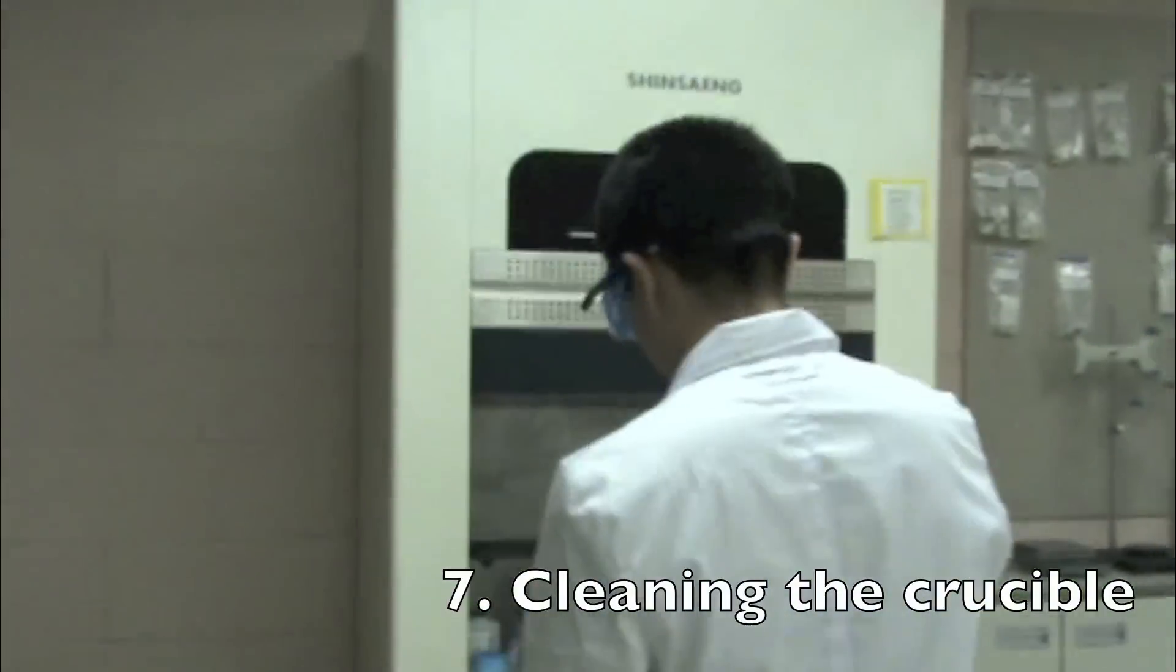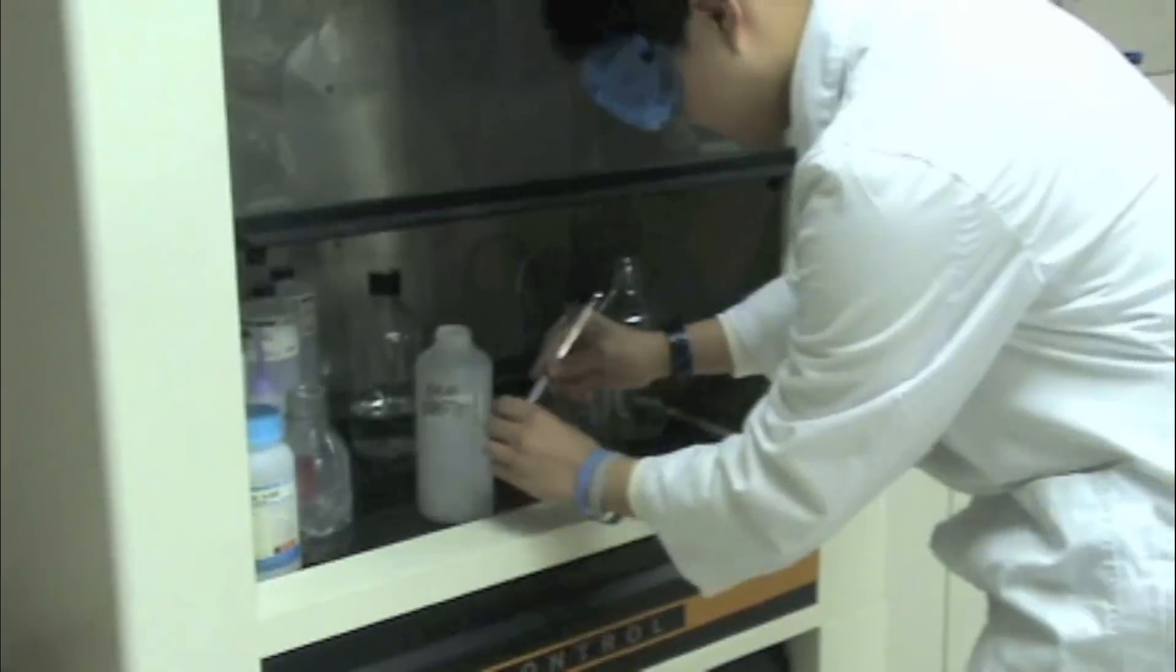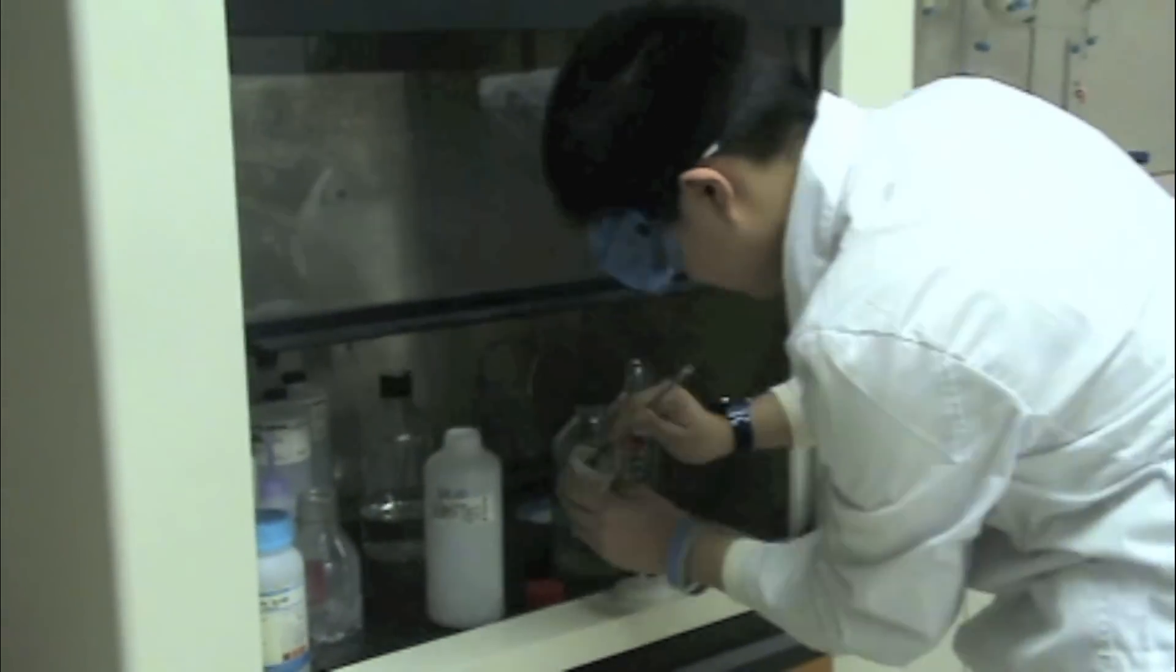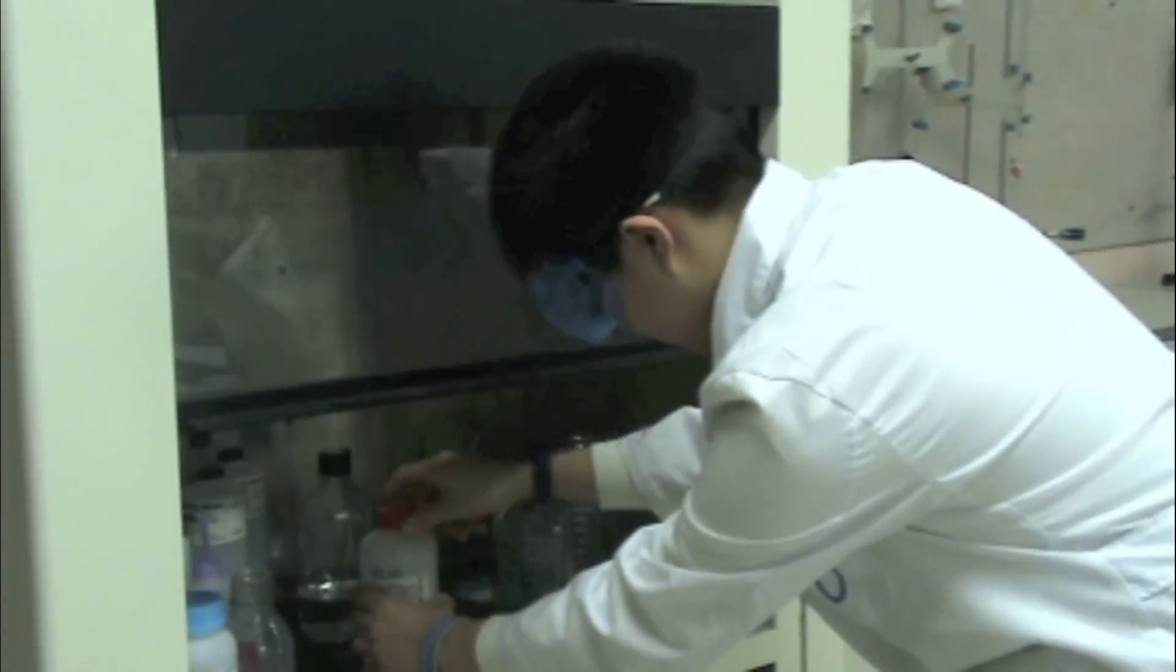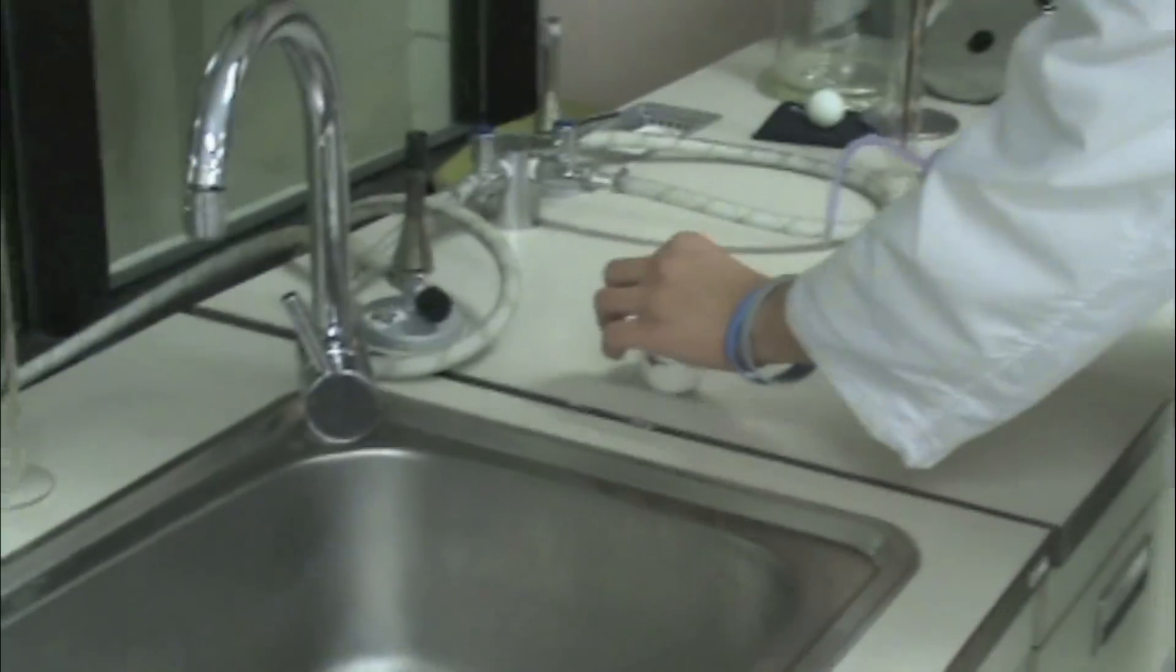Don't forget to clean up after your experiment. To clean the crucible, first, use a spatula to dispose of all the solid waste in your crucible into the solid waste container. Then, rinse the crucible with distilled water.